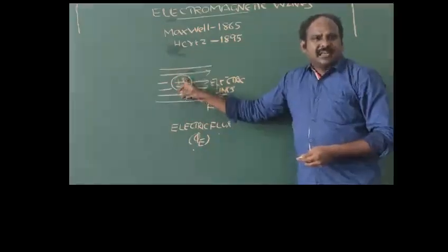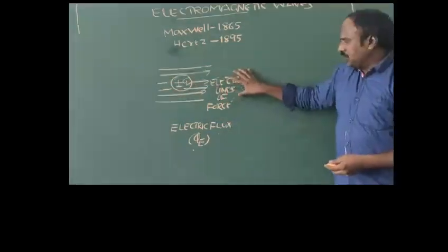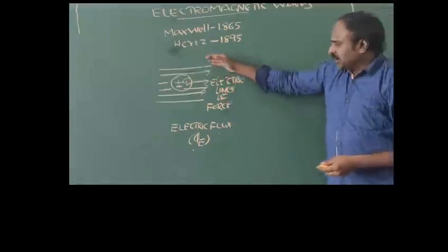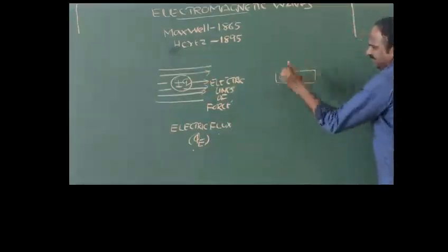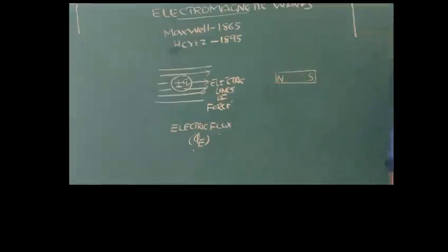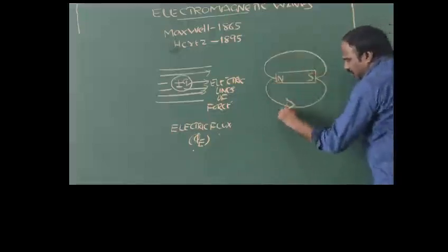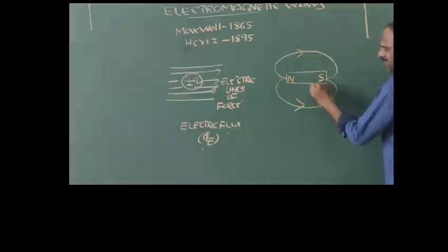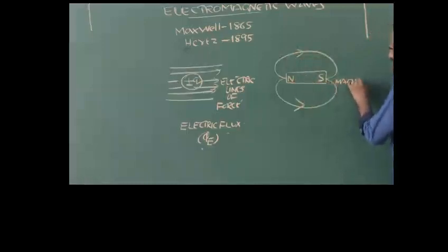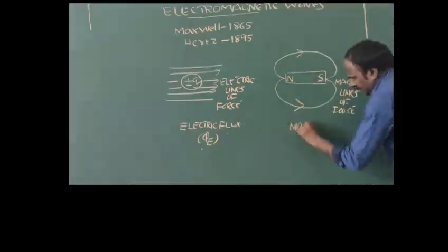If we take a charge — positive or negative — it generates a number of lines of force, called electric lines of force. In the same way, if we take a magnet having two poles, north and south, this magnet also produces a number of lines starting from the north pole to the south pole. These are called magnetic lines of force.